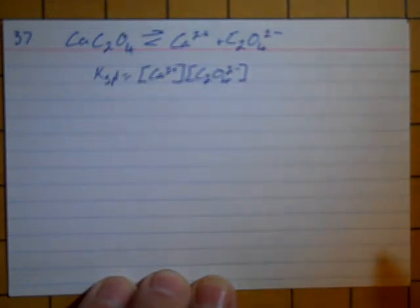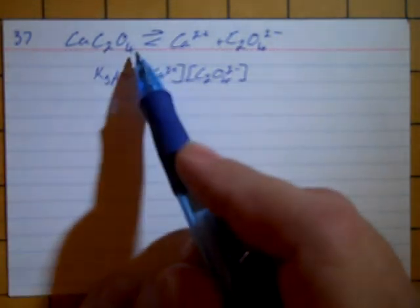From the book homework, this is number 17.37. It's asking us in a 1 liter solution that's saturated with calcium oxalate, calcium oxalate here.